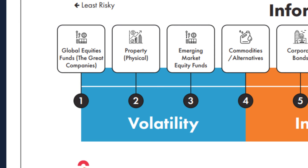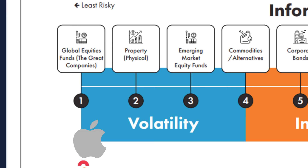Now, the great companies of the world — everyone always panics and says, oh, they're shares. Well, yes, they are. But we're talking about investing in the great companies of the world in a globally diverse portfolio. So we're not just owning one Apple share or one Amazon share, or one share in Monzo. We're actually looking at buying tens of thousands of shares across lots of different sectors and lots of places around the world. So we're diversifying — instead of just owning one, we're owning the great companies of the world.